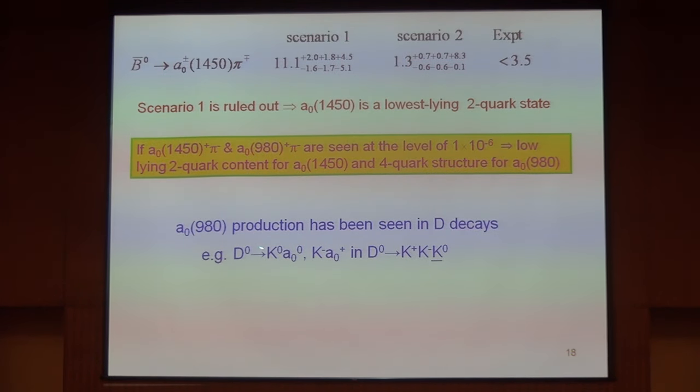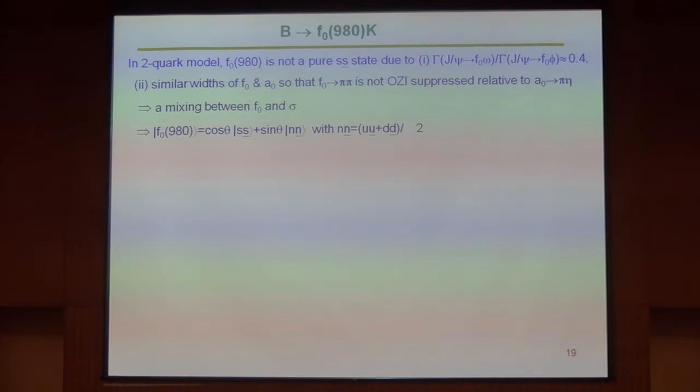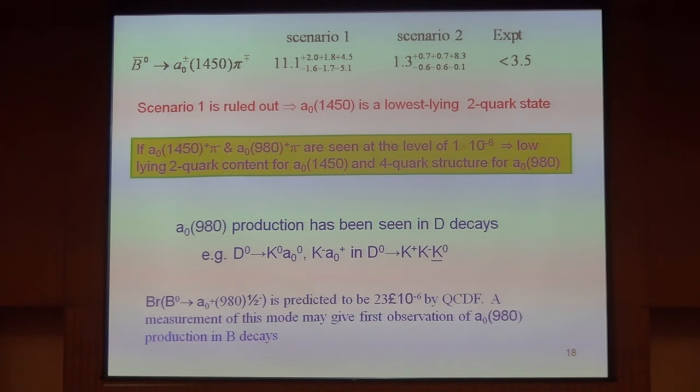In charm decay, a₀(980) has been seen—it's easy to produce in charm decay. Here we predict the D-meson decay. If you look at D-meson decay to a₀(980), we predict the branching fraction is on the order of 10⁻⁶, large enough to be seen.